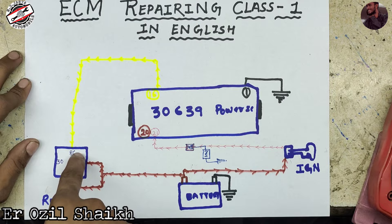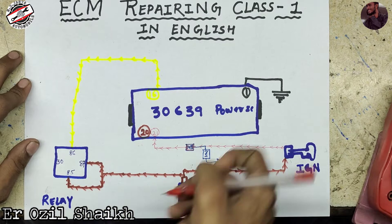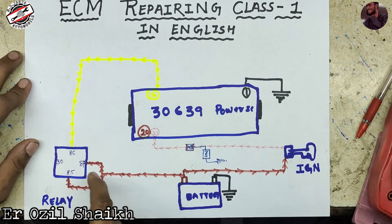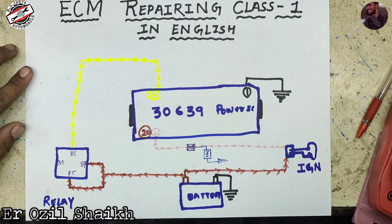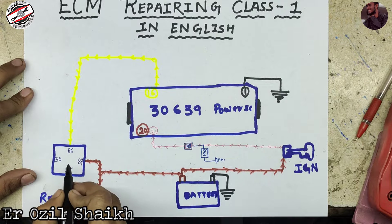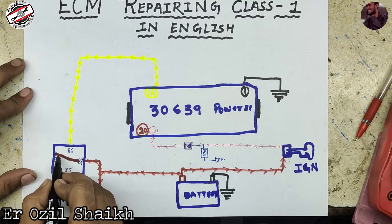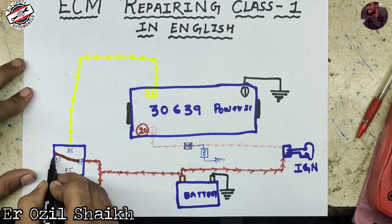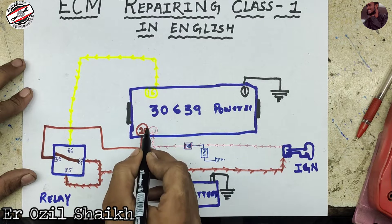When the ground comes to relay pin 86, an electromagnetic field is created. This causes relay pin 87 to connect to pin number 30. When this electromagnetic is created, pin 87 joins to pin number 30, and this 12 volt goes to pin number 20 of the IC.